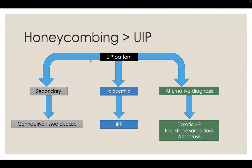There are some helpful features that can help you suggest that this typical pattern is secondary to connective tissue disease, or there are features to make the typical UIP pattern an alternative non-IPF diagnosis, and by exclusion you can reach the diagnosis of IPF UIP pattern.